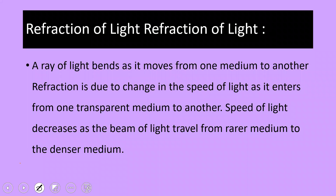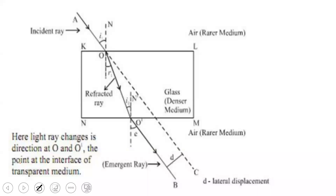Refraction of light: a ray of light bends as it moves from one medium to another due to refraction, because the speed of light changes when it goes from one medium to another. In a glass slab, the incident ray and the emergent ray will be parallel to each other. Refraction happens at two interfaces — first when light goes from air into glass, and again when it goes from glass back to air. The perpendicular distance between the incident and emergent rays is called lateral displacement.